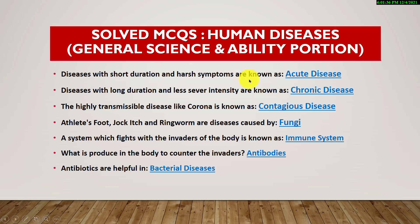Diseases with short duration and harsh symptoms are known as acute diseases. Diseases with long duration and less severe intensity are known as chronic diseases. Highly transmissible diseases like corona are known as contagious diseases. Athlete's foot, jock itch, and ringworm are diseases caused by fungi.